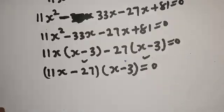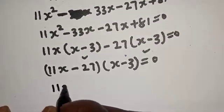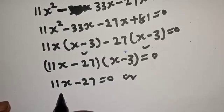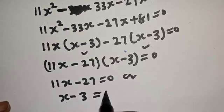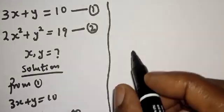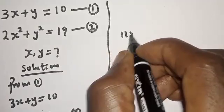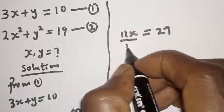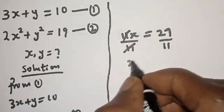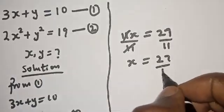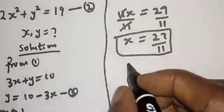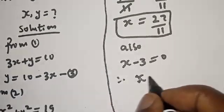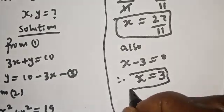We have (11x minus 27)(x minus 3) equals 0. There are two cases: the first case is 11x minus 27 equals 0, or the second case is x minus 3 equals 0. From the first case, 11x equals 27, so dividing both sides by 11 gives x equals 27 over 11. From the second case, x equals 3. These are the two values of x.